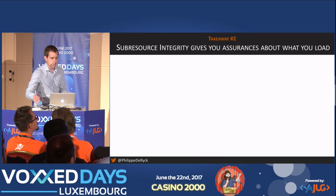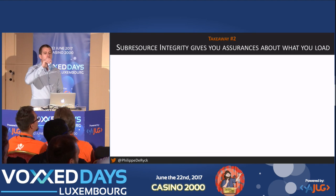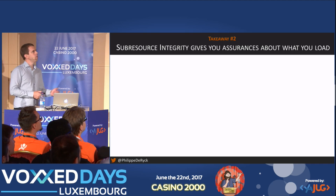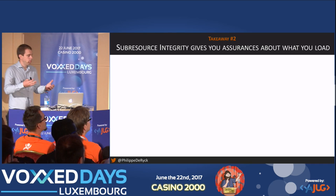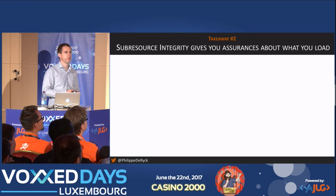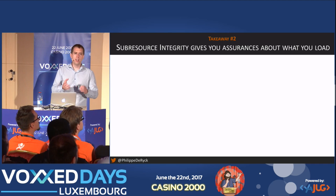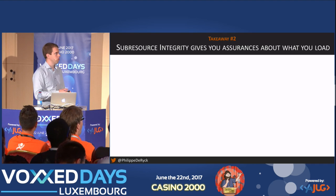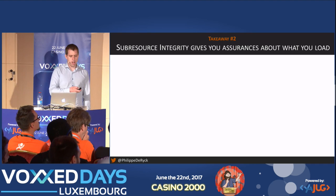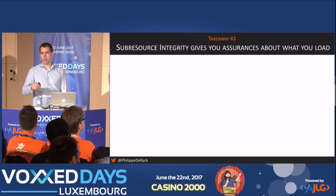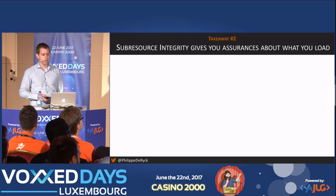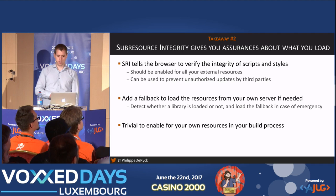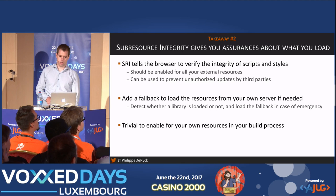That brings me to the second takeaway: you should start enabling Sub-Resource Integrity. It's really trivial to do, doesn't take too much work, and buys you a lot of assurances. Definitely put this on your list. There's one caveat — if the CDN is attacked at the same moment you copy the tag, you won't get immediate protection. But afterwards, you get all the protection in the world, which is really cool.